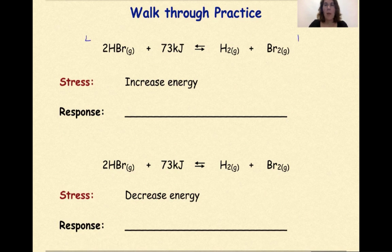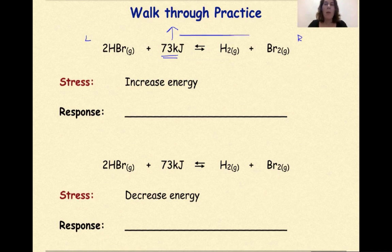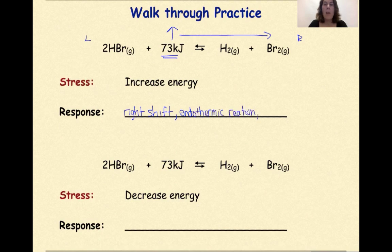Let's look at some more examples. This is my left and this is my right. The stress here is an increase in energy, and that energy is going to be represented as 73 kilojoules. So an increase of energy — I'm going to put an up arrow over the 73 kilojoules. That means I have more energy on my reactant side, therefore my point of equilibrium has to shift in order to form more products. So the response here is going to be a right shift — an increase in energy is the same thing as an endothermic reaction. The amount of HBr will decrease, the amount of H2 will increase, and the amount of Br2 will also increase as we shift to favor products.